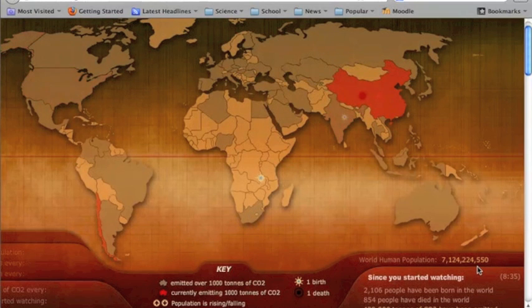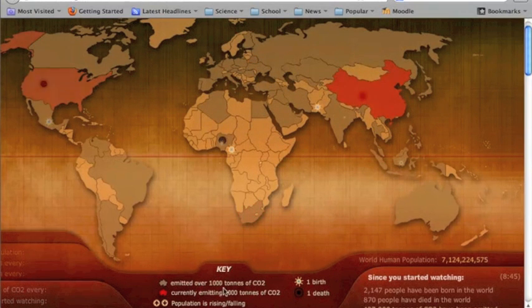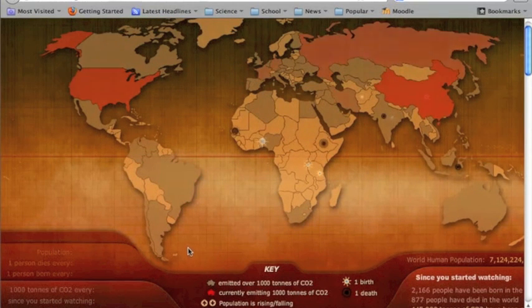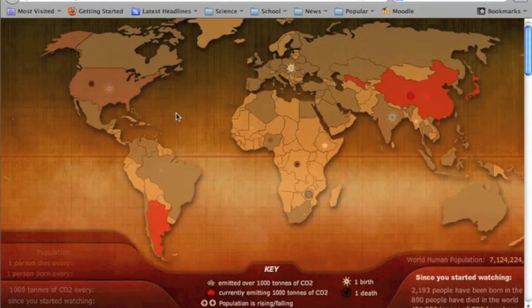You can see we're over 7 billion. Now the question is can the world sustain 7 billion people or is there a point where we're going to reach a limit due to things like resources. You can also see this chart is indicating things like pollution and carbon and everything like that. So if you want to check this out it's breathingearth.net and it's just kind of an interesting statistical representation of what's happening to the world population.